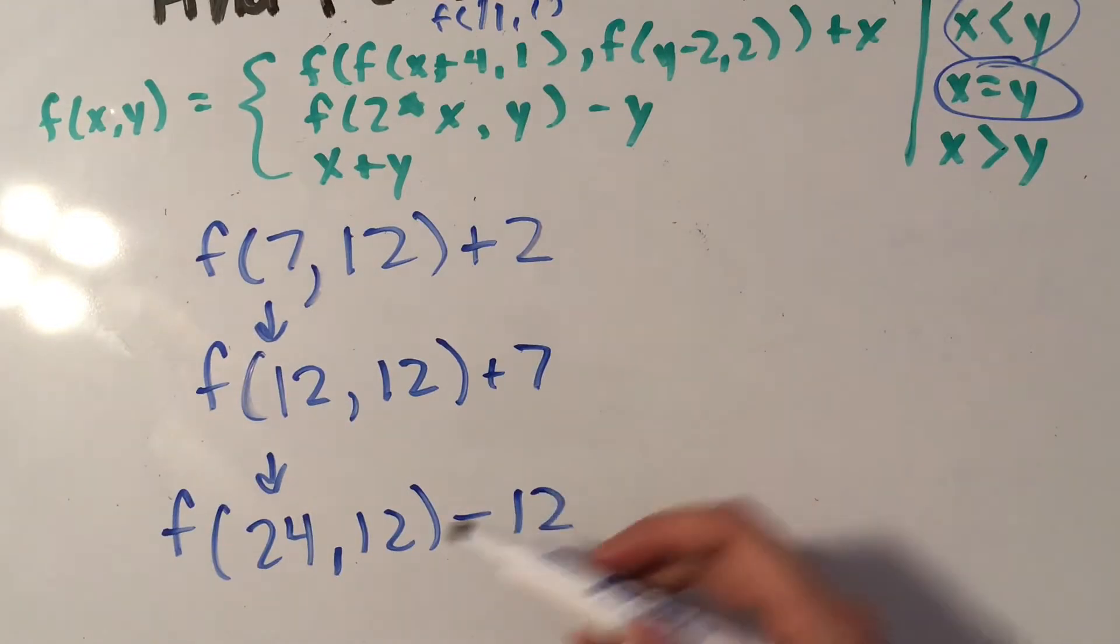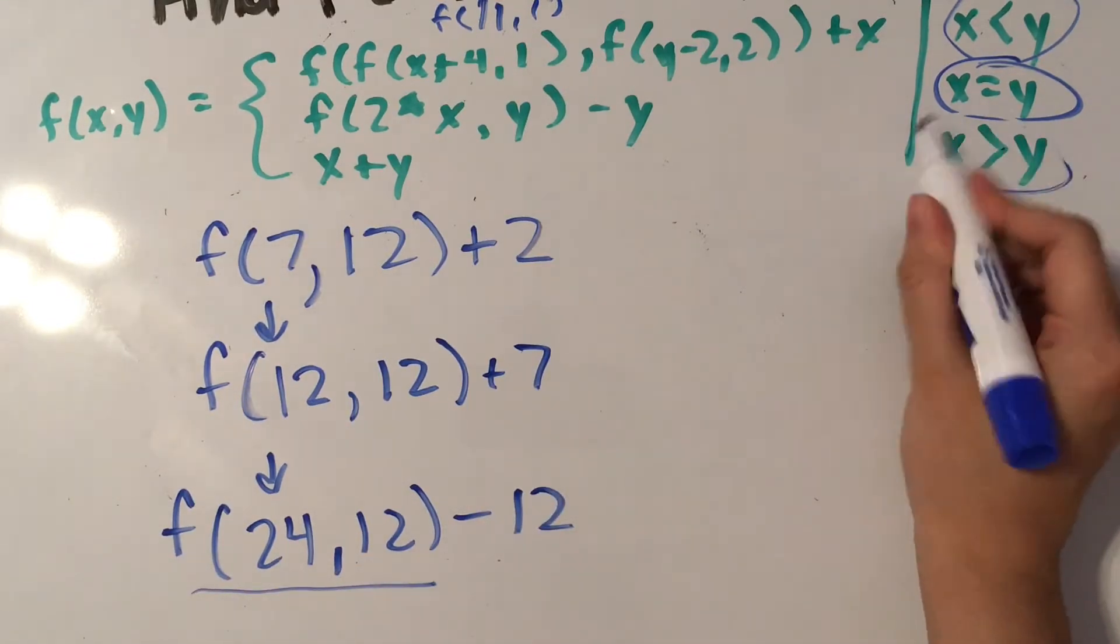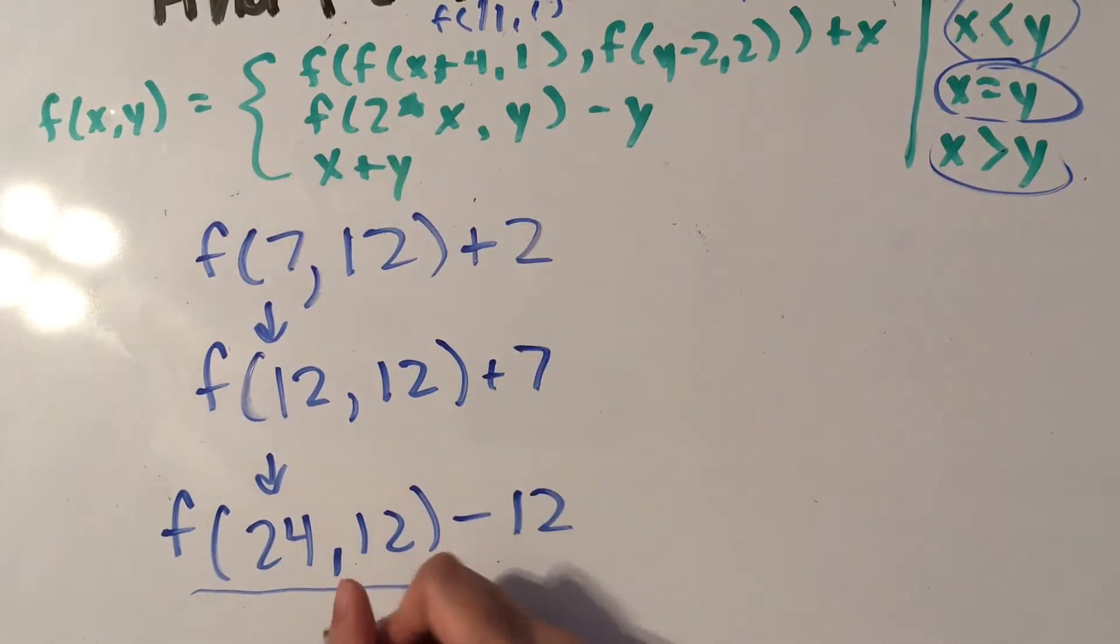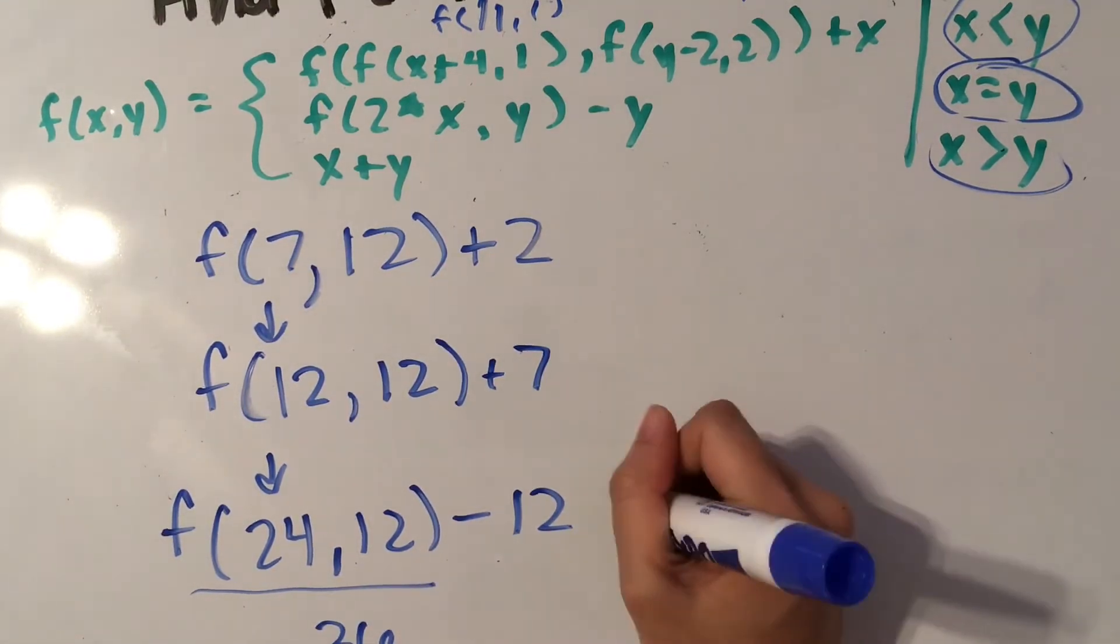Okay, so now we see that f of 24, 12 is going to call this third one since x is now greater than y. So x plus y is 36. So we're going to have 36 minus 12 which is 24.